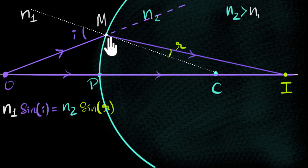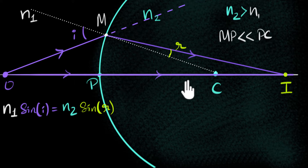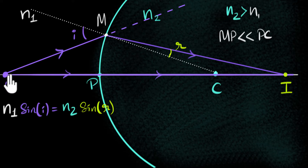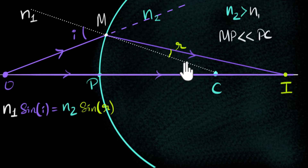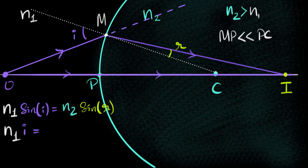We're going to make one approximation: we assume that point M is very close to point P — in other words, MP is a very tiny value compared to the radius of curvature PC. When M comes very close, the incident ray is nearly along the principal axis, so the angle of incidence i will be very tiny, which means r is also very tiny. That means we can use small angle approximations, where sin(theta) ≈ theta. So Snell's law becomes: n1 × i = n2 × r.